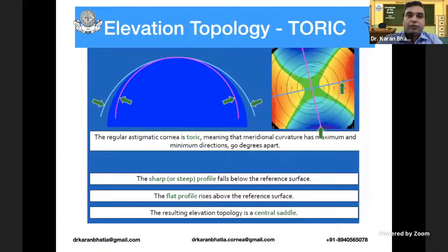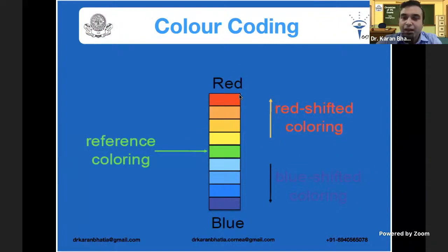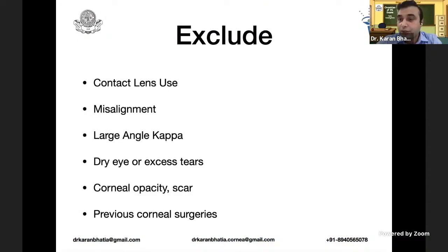Color codings are very important in Pentacam. When you see red in the Pentacam, it means something is abnormal. Lower values shift towards blue. Before performing a Pentacam, it is important to exclude contact lens use — this should be stopped at least 7 to 10 days before the scan, otherwise readings will be wrong. Other causes such as misalignment, large-angle kappa, dry eyes, opacity or a scar, and previous corneal surgeries must also be excluded, as they will give unreliable data.